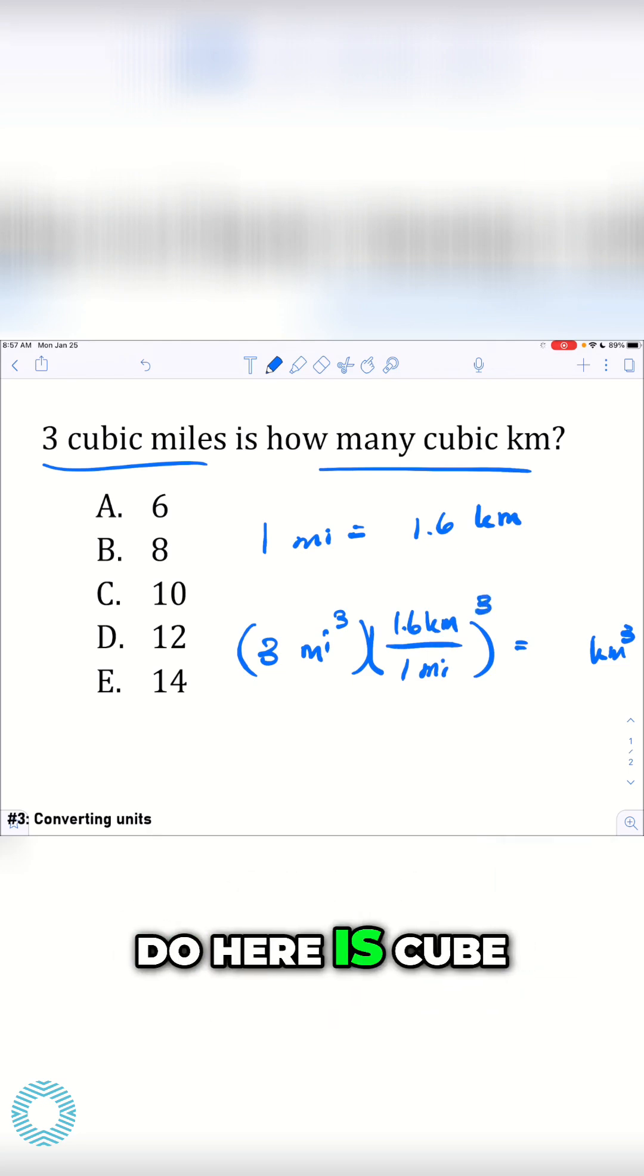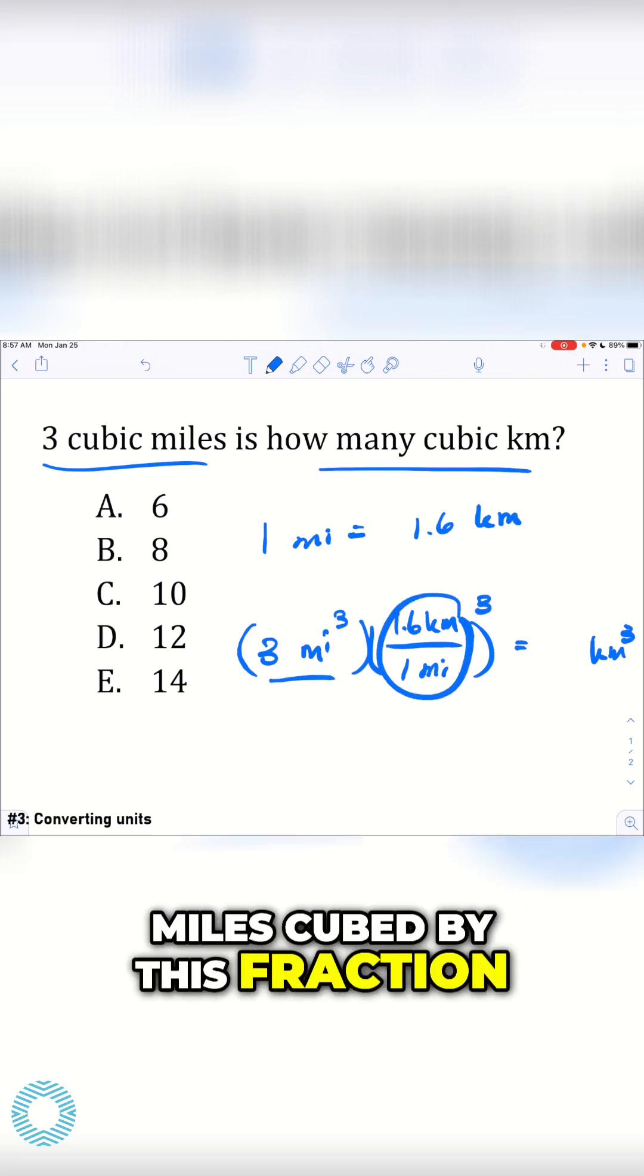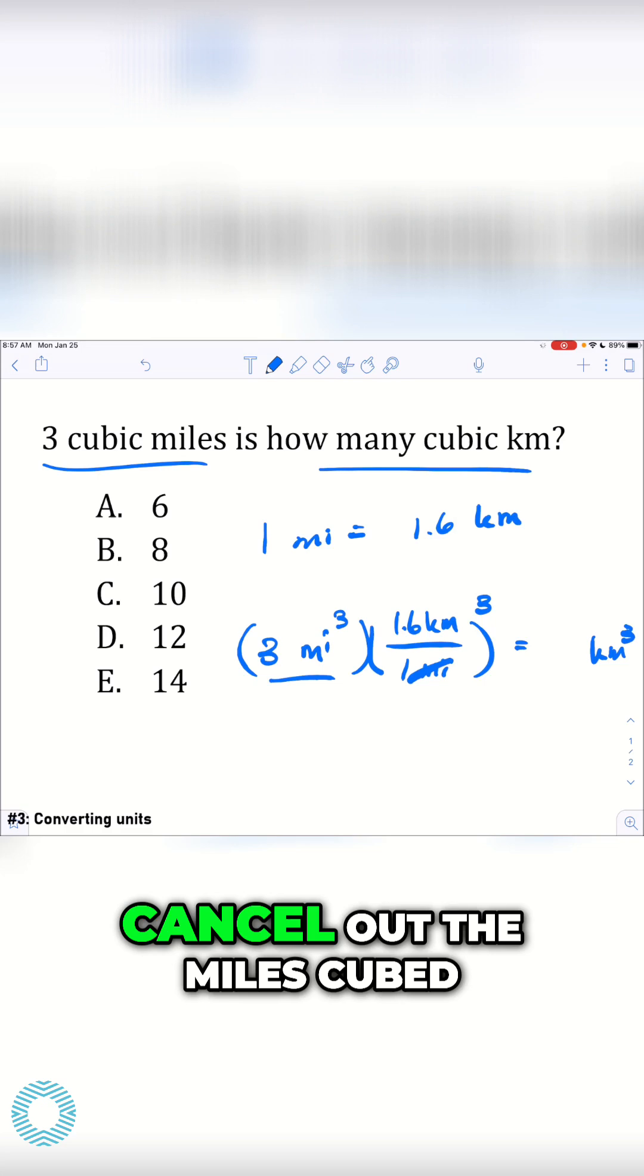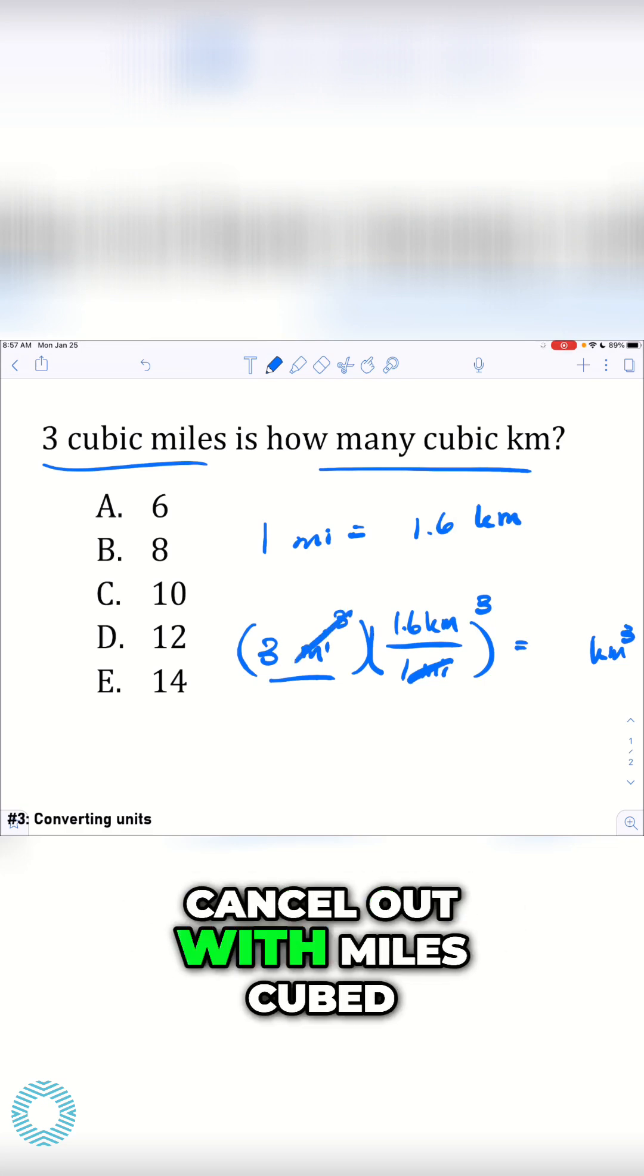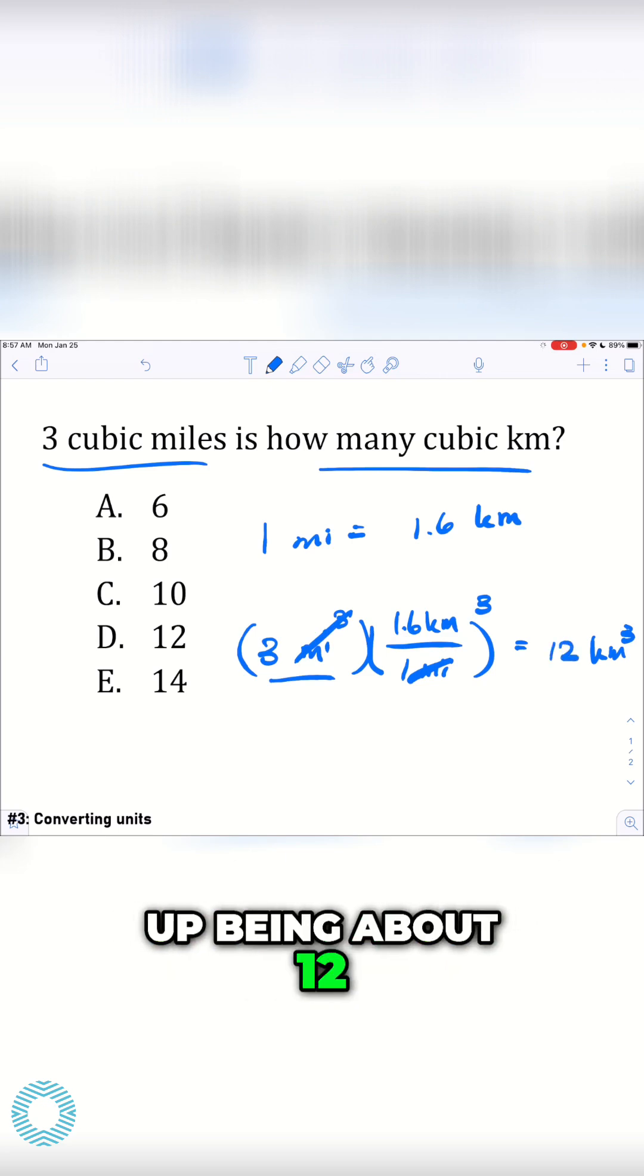Now, what we can do here is cube this entire fraction. When I multiply three miles cubed by this fraction cubed, my units cancel out. The miles cubed cancel out with miles cubed, and I end up with three times 1.6 to the third, and that just ends up being about 12 kilometers cubed.